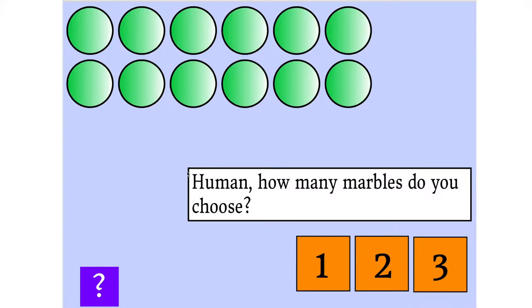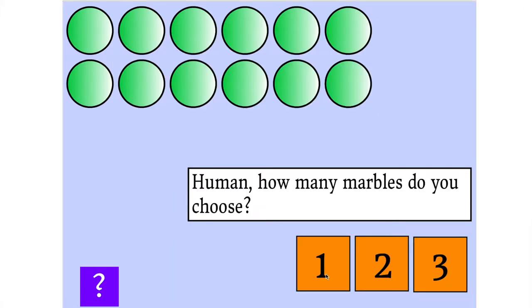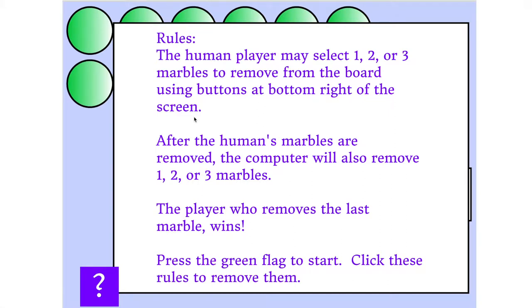So these green disks are representing marbles, and let me click on the rules button here. Basically it's the human against the computer, and the human player may select one, two, or three marbles to remove from the board at one time. I've got buttons on the bottom right here, so you can choose one, two, or three of these. After the human removes their marbles, then the computer will play, and they have the same rules.